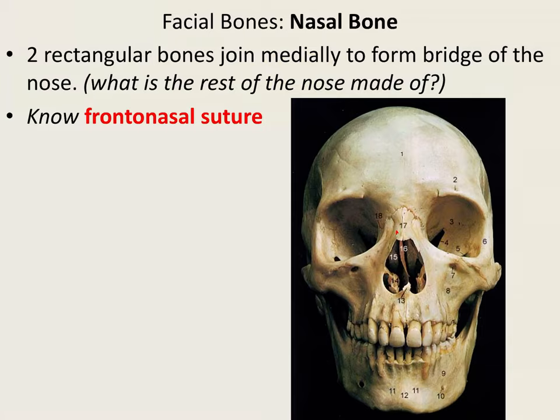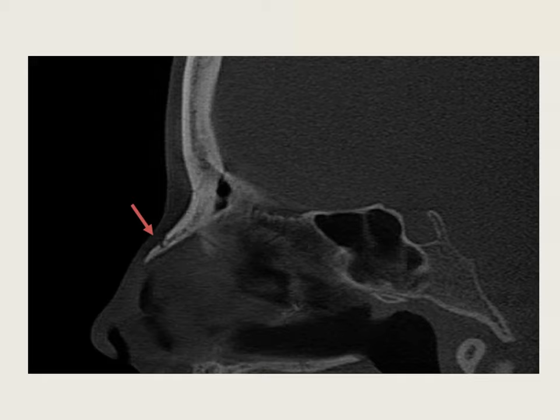In the next slide, you can see a real human skull. You can see the nasal bones — number 17 — there are two of them. You can see the nice frontonasal suture right here. The nasal bone forms the upper bridge of your nose where it contacts your forehead. The rest of your nose is made of hyaline cartilage.